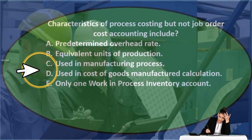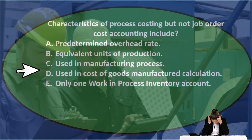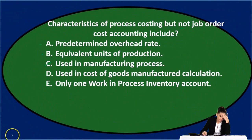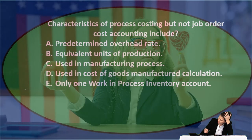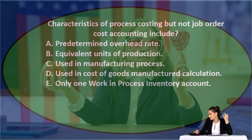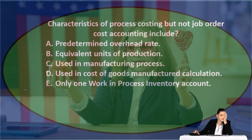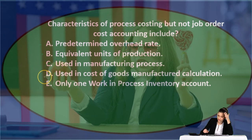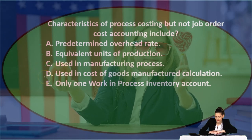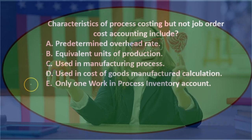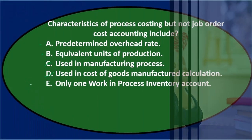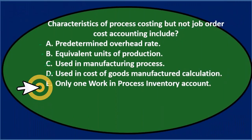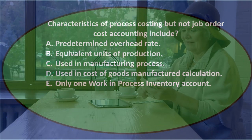Option D, used in cost of goods manufactured calculation — if we're manufacturing something, both systems are going to have to calculate the cost of goods manufactured. So cost of goods manufactured is going to be in both systems. I'm going to say that's not it.